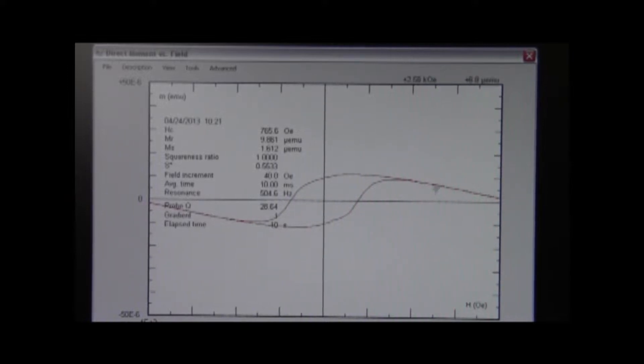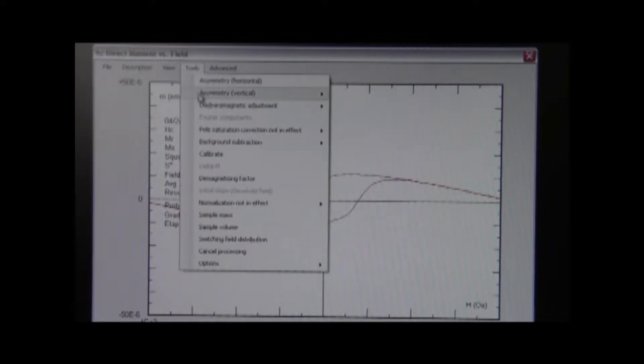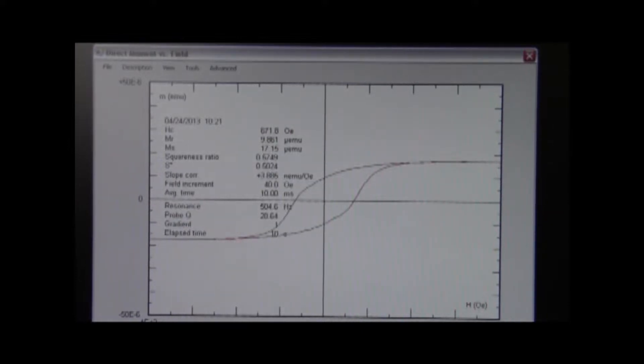As you can see from here, there's a diamagnetic background, and that's due to the AGM probe itself. We can remove that using the software, which is what I'm doing now. And there you have the corrected loop, and here again, you can see the saturation moment is about 17 micro-EMU. The remnants is just below 10 micro-EMU, and the coercivity is a little over 670 URSTED. And you can see here, the data acquisition measurement time for the entire loop was 10 seconds.